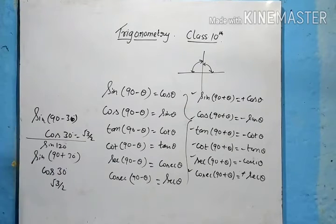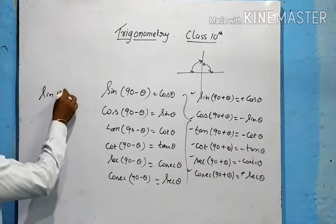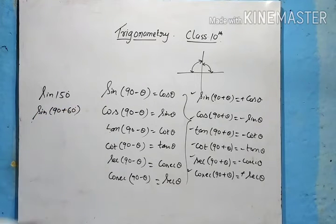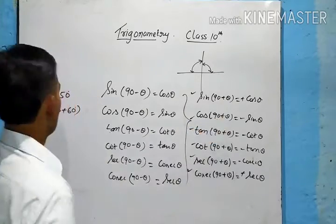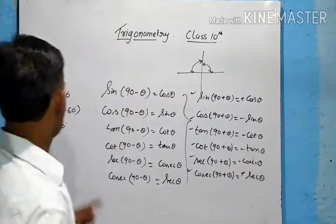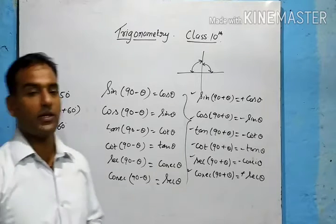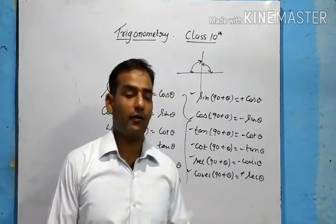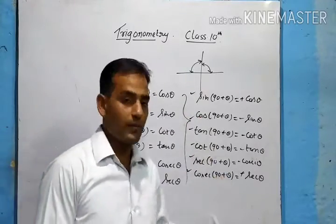Another example: sin 150° = sin(90° + 60°) = cos 60° = 1/2, positive because sin is positive in the second quadrant. There are also formulas for 180° + θ, 180° − θ, 270° + θ, and 270° − θ, but for your current course only the 90° − θ and 90° + θ cases are required.